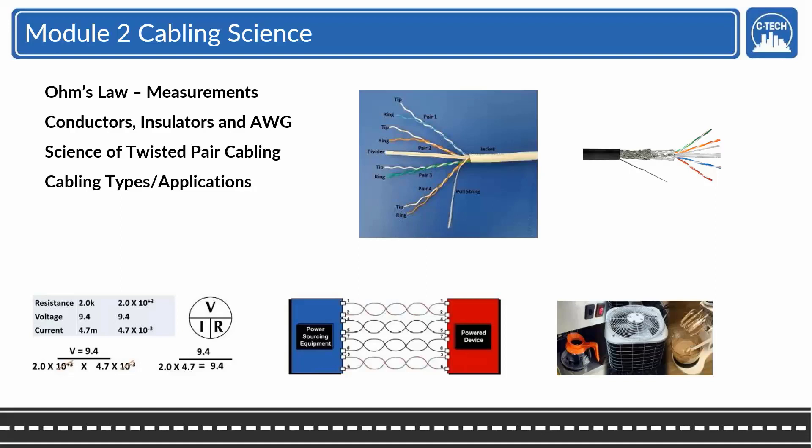Cabling types and applications - you know, plenum, riser, general purpose and where it's used. Noise reduction methods - there's three of them: pair twisting, shielding and differential signaling. And we'll get into all that. And then of course we do the applications of the PoE, and we'll actually calculate wattage of the individual systems.